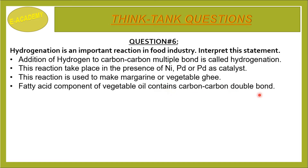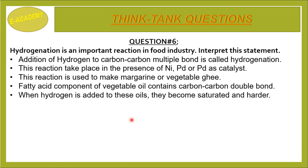This reaction is used to make margarine or vegetable ghee. The fatty acid component of vegetable oil contains carbon-carbon double bonds. When hydrogen is added to these oils, they become saturated and harder. The hydrogenation reaction occurs in the presence of nickel, palladium, or platinum, and when hydrogen is added to vegetable oil, it gives vegetable ghee or margarine. The unsaturated fatty acids in the oil become saturated and harder.